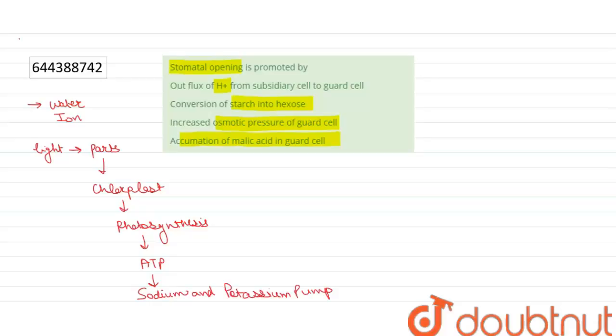The potassium ions are pumped into guard cells by creating a concentration gradient.